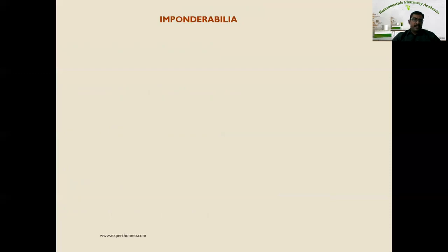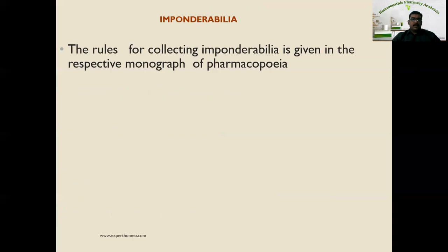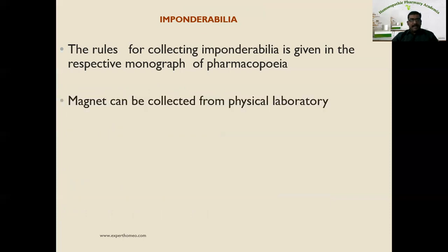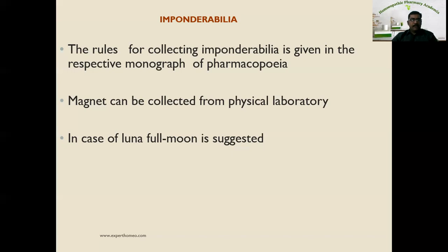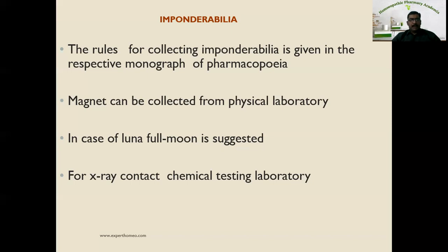Imponderabilia are prepared from energy sources — natural or synthetic. Rules for collecting imponderabilia are given in respective pharmacopoeia monographs. The magnet can be collected from a physical laboratory after checking for strength. For Luna, medicine is prepared from moonlight using a full moon. For X-ray, it must be collected from a chemical testing laboratory using X-ray of a particular strength as specified in pharmacopoeia monographs.